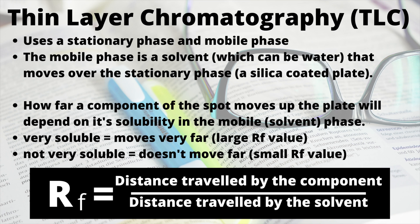The different spots on the chromatogram represent the different components of the initial mixture placed on the baseline. How far each component travels depends on how it interacts with the mobile and stationary phases. Because our mobile phase is a solvent, we can talk about how soluble the different components are in it. For example, if the mobile phase is water, alcohols — which can form hydrogen bonds — are very soluble and would travel quite far up the plate, giving them a large RF value.